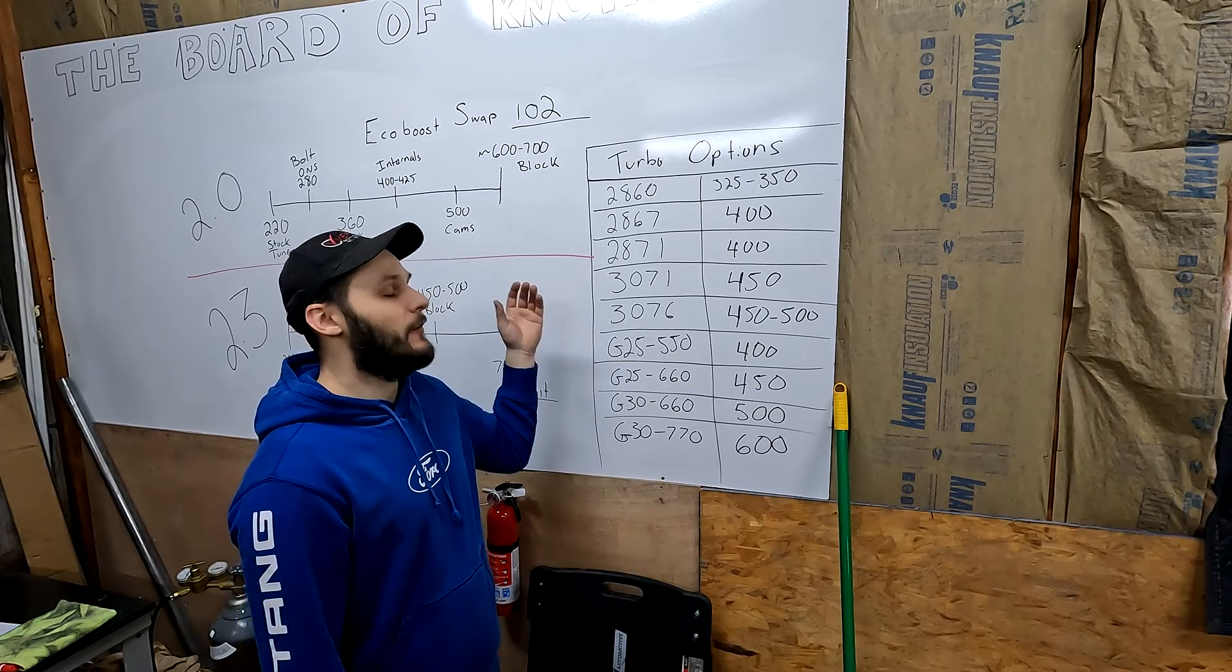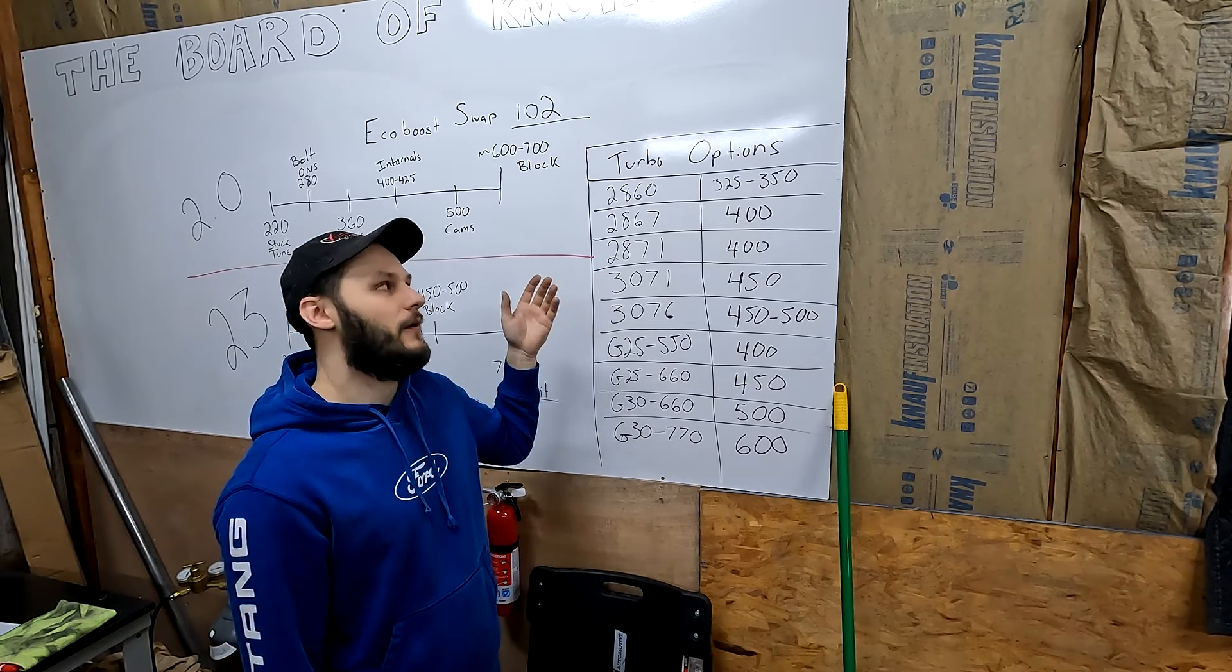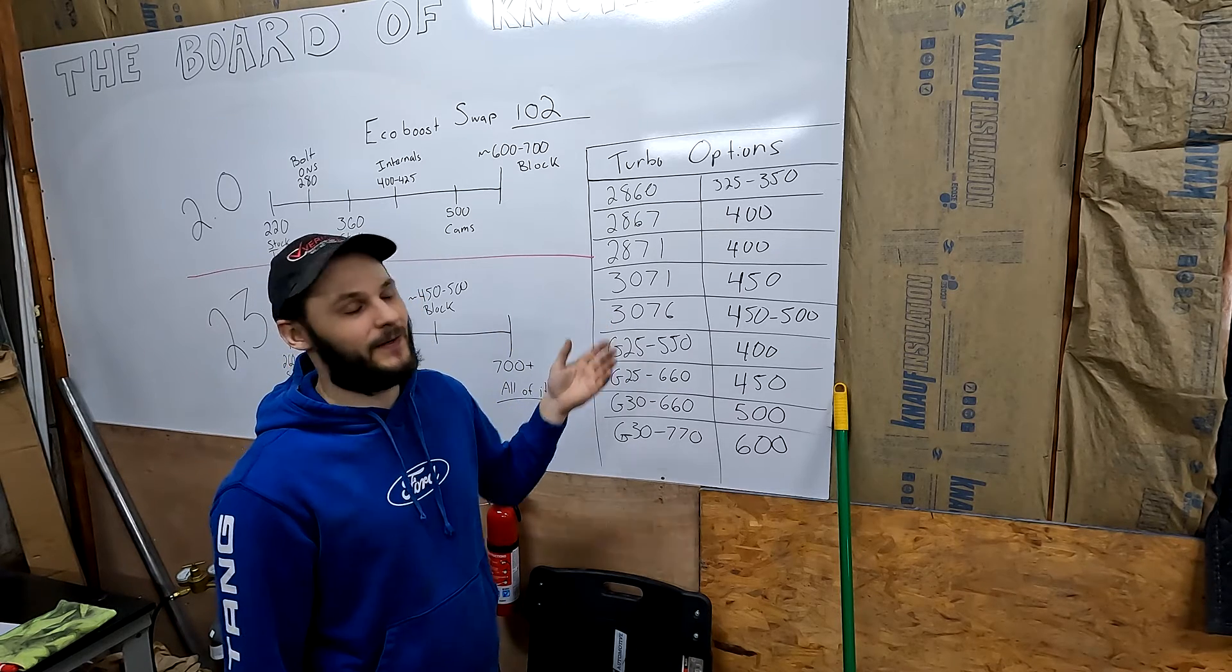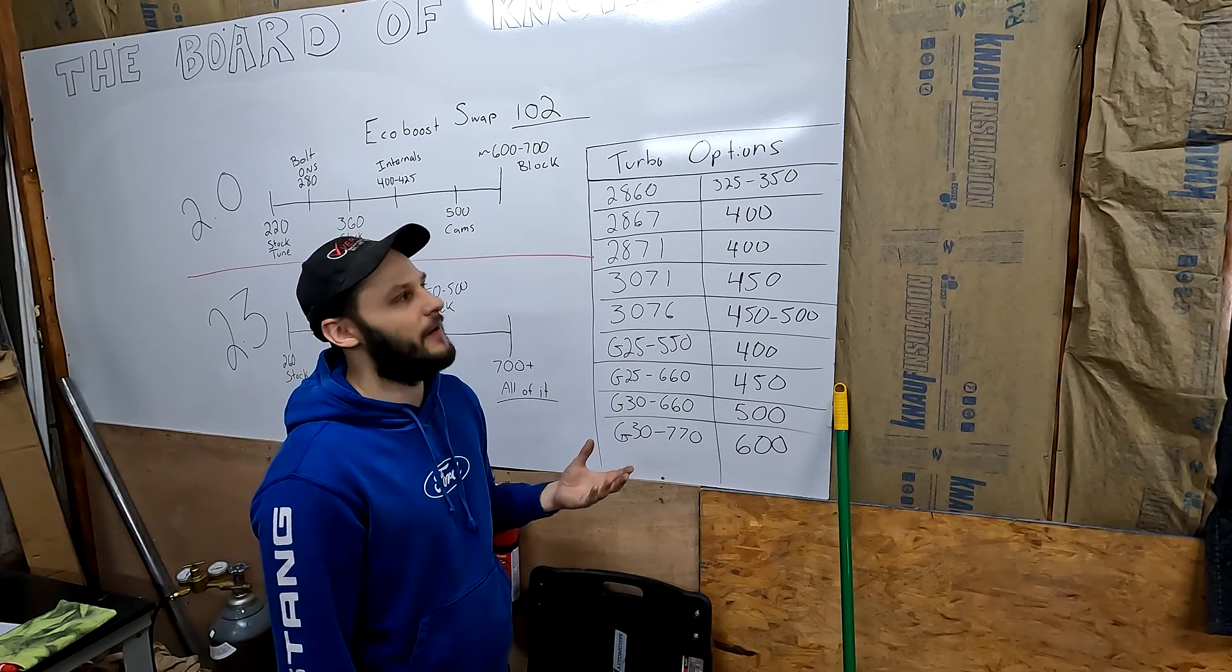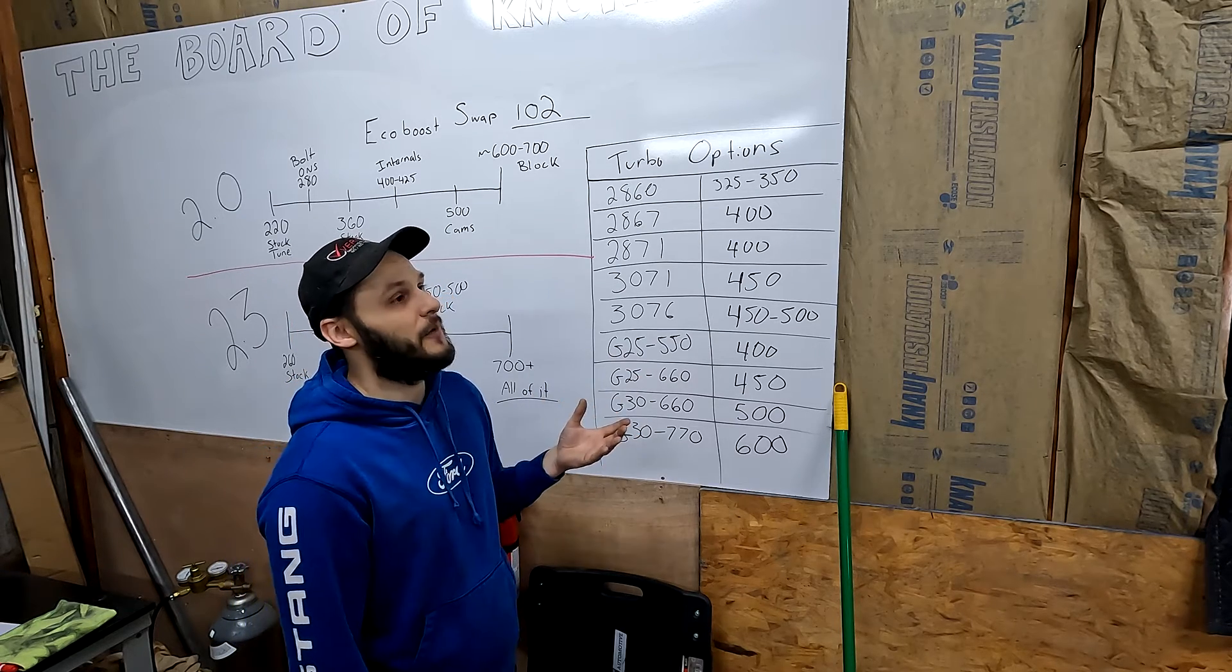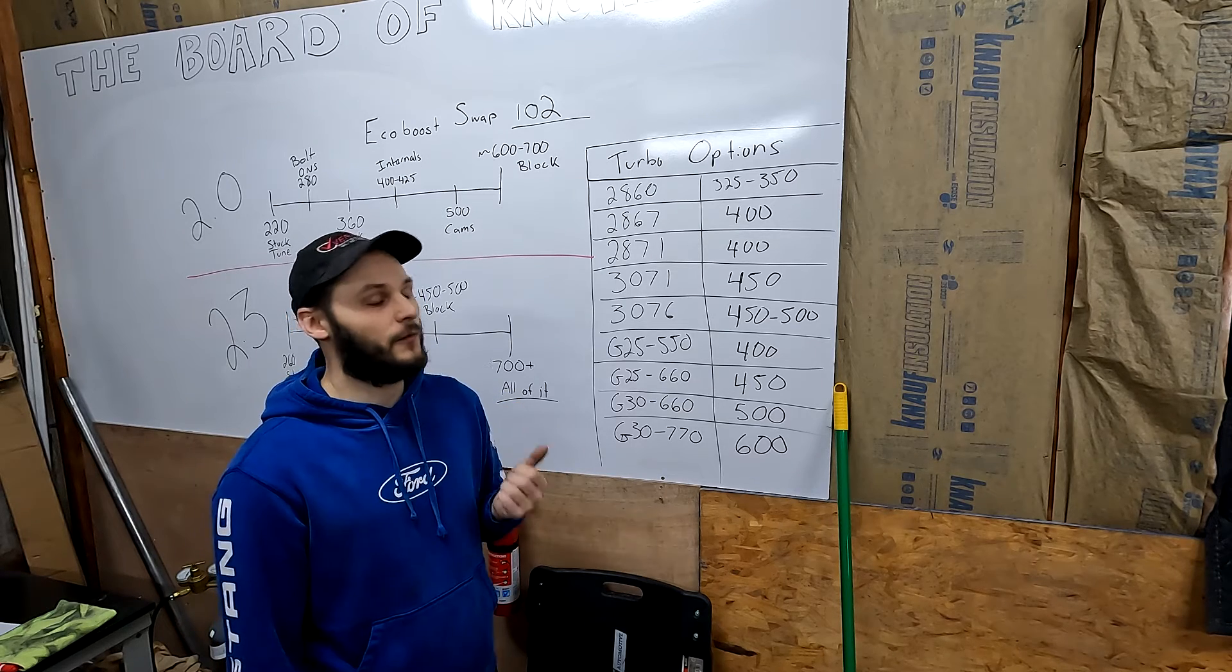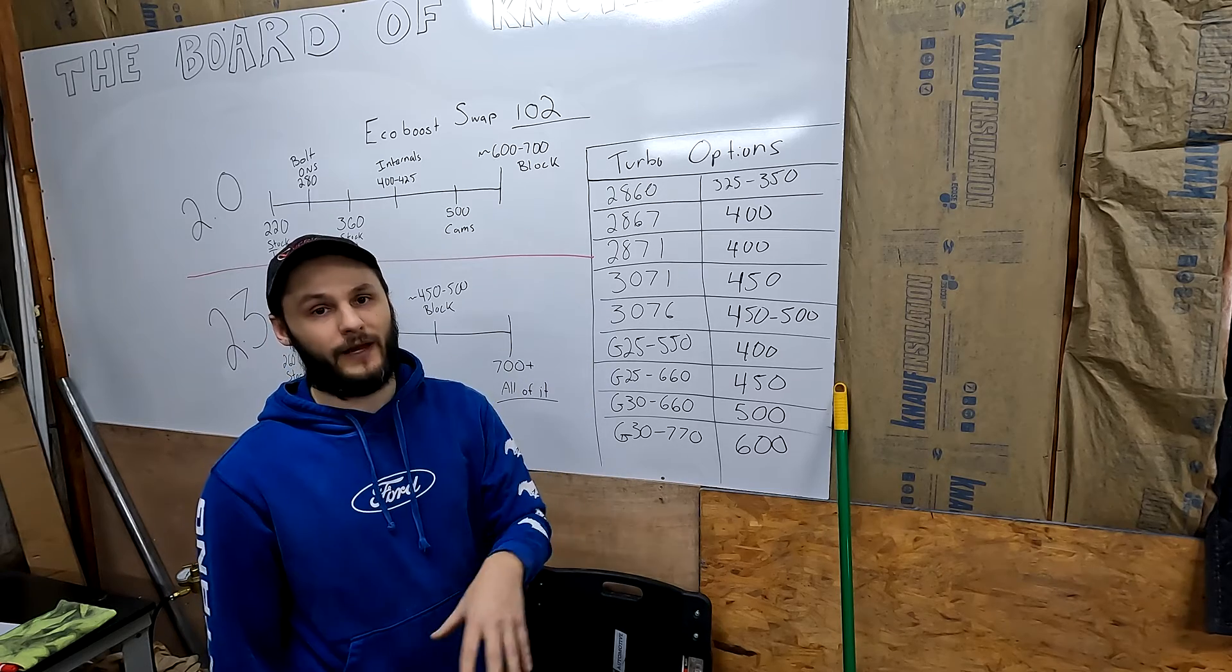First up, we have the Garrett 2860. This is an older turbo. It's also affectionately known as the Disco Potato. This turbo will net you 325 to 350 wheel horsepower. This is the perfect turbo if you want to stay on stock fuel system. It has really quick response, it's really quick to spool, and it won't hit that fuel limit at 360.